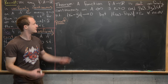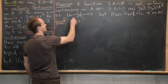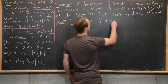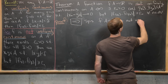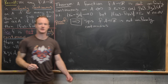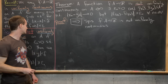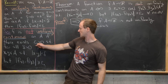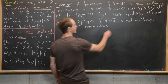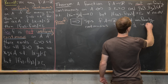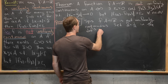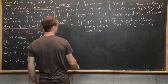We now prove the theorem, starting with the forward direction: suppose f from A to ℝ is not uniformly continuous. By the definition of not being uniformly continuous, there exists epsilon-naught > 0 such that for all delta > 0 the condition fails. We set delta = 1/n in the definition of not uniformly continuous.